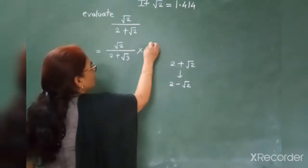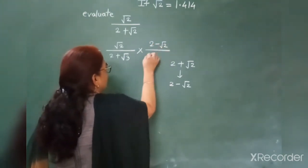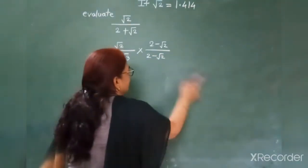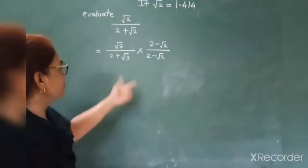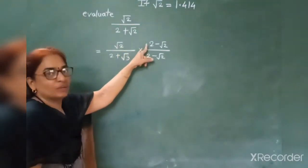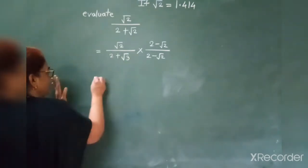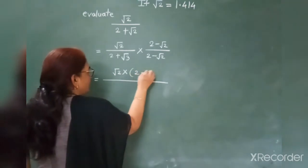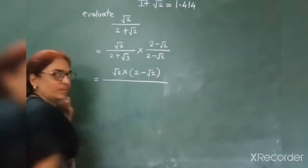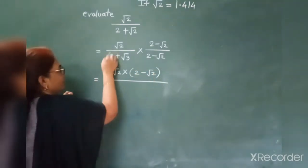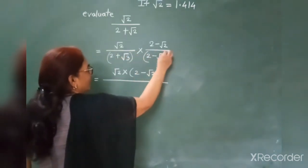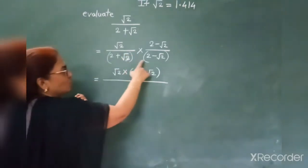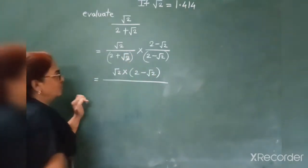So it becomes: root 2 into (2 minus root 2), upon (2 minus root 2). We will do it step by step. Then the denominator is 2 plus root 2 into 2 minus root 2 — we can use the identity here.